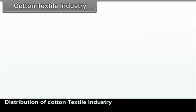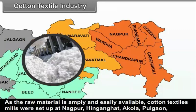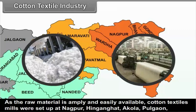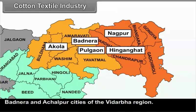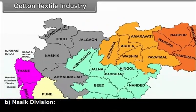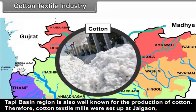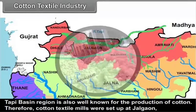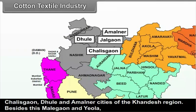Distribution of Cotton Textile Industry. As the raw material is amply and easily available, cotton textile mills were set up at Nagpur, Hinganghat, Akola, Pulgao, Badnera and Achalpur cities of the Vidarbha region. The Nashik Division Tapi Basin region is also well known for cotton production. Therefore, cotton textile mills were set up at Jalgaon, Chalisgaon, Dhule and Amalner cities of the Khandesh region.